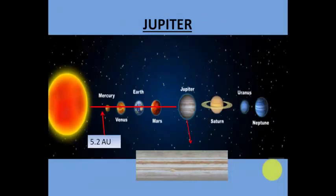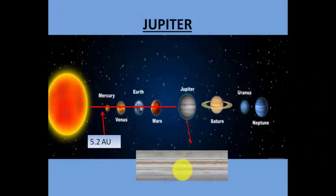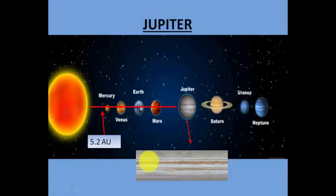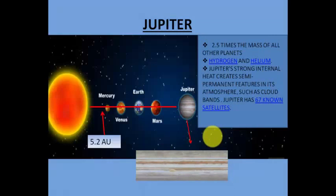Jupiter is the fifth planet in our solar system and the largest of all planets. The distance between the Sun and Jupiter is 5.2 astronomical units. In images you can see light and dark cloud rings — these are clouds moving on Jupiter, some clockwise and some in the opposite direction.